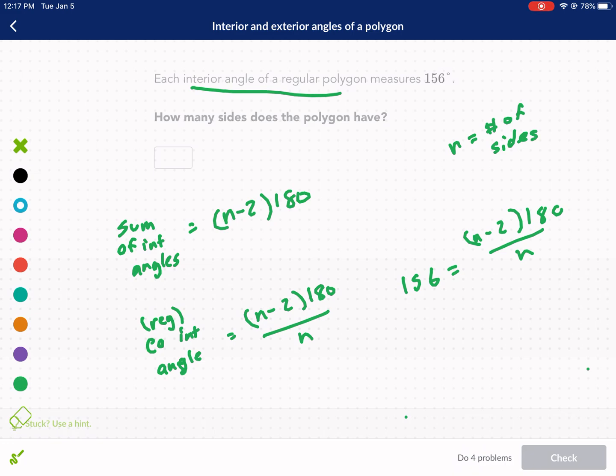This is more algebra than geometry, but this is the process. So what I'm going to do is multiply both sides by n first, and I get 156n equals n minus 2 times 180. Now I'm going to distribute the 180 to both the n and the minus 2, so I get 156n equals 180n minus 360. Now there's an n on both sides, so I'm going to get them together.